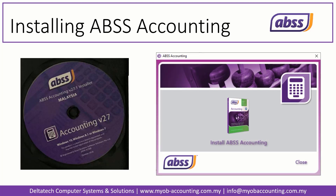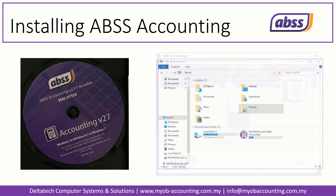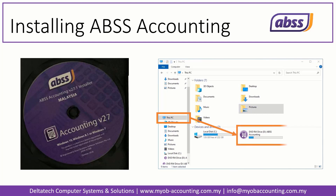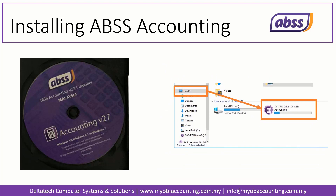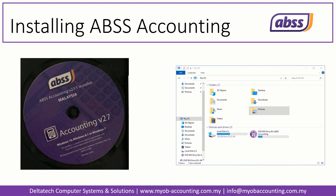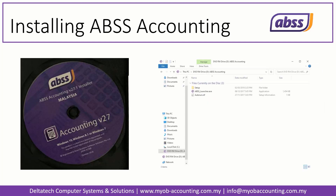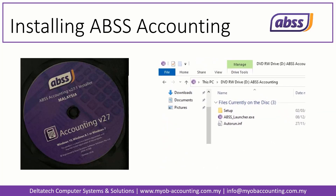If the Auto Launcher does not display, then in your Windows Explorer, locate the CD or DVD icon. Double-click on the CD icon to display its contents. Next, double-click on the ABS-S launcher file.